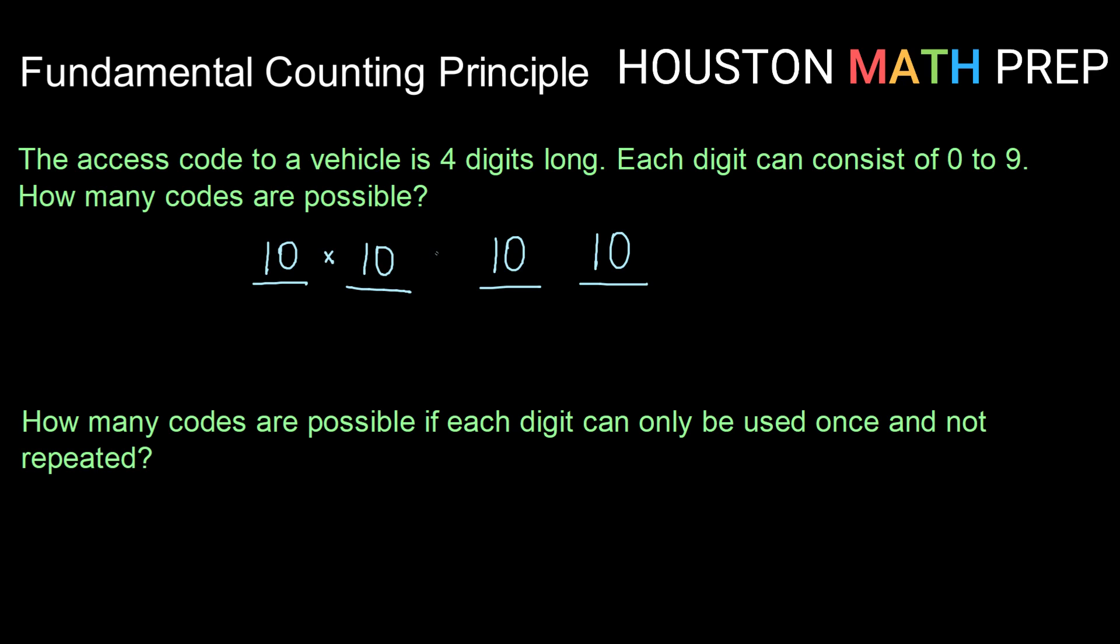And in the fourth I can have from 0 to 9, so 10 possibilities. The fundamental counting principle says we'll multiply all the different ways that each piece of the code can be chosen. And that gives us 10 to the fourth, or a 1 followed by 4 zeros, 10,000 possible codes.